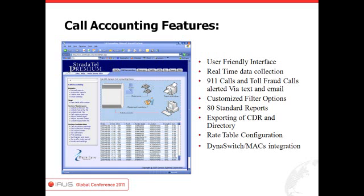Real-time data collection with customized filter options — you're getting 80 to 100 canned reports, but with the filtering and customization you can track by costs, certain dial digits, and after-hours calls. You can exclude and include as much information as you want. Exporting your CDR — it can be exported into an Excel or CSV file, and we can work with you to schedule that at the end of a day or night.